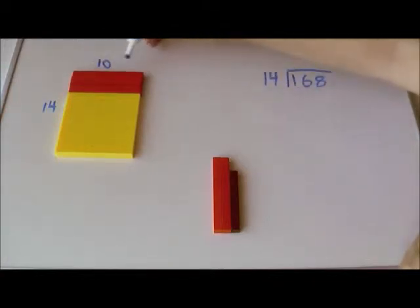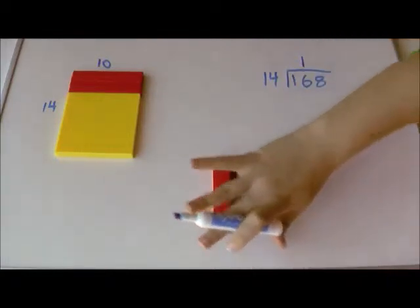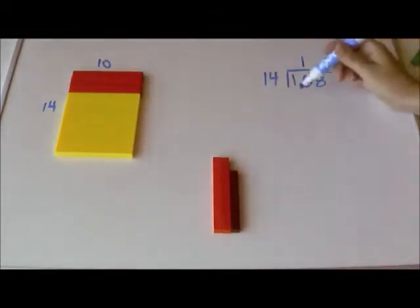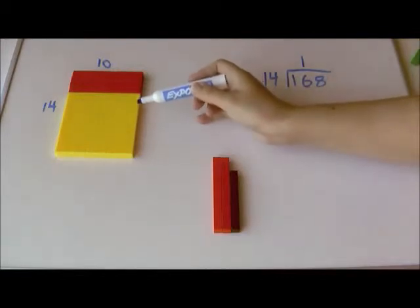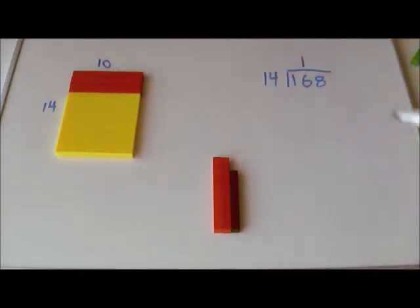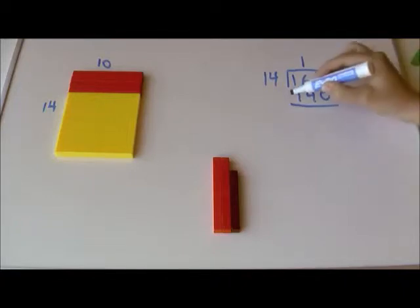So I've gone across 110, 110 there. And so how much did I take away from my original 168? I took away 10 times 14 which is 140. So I took away 140.